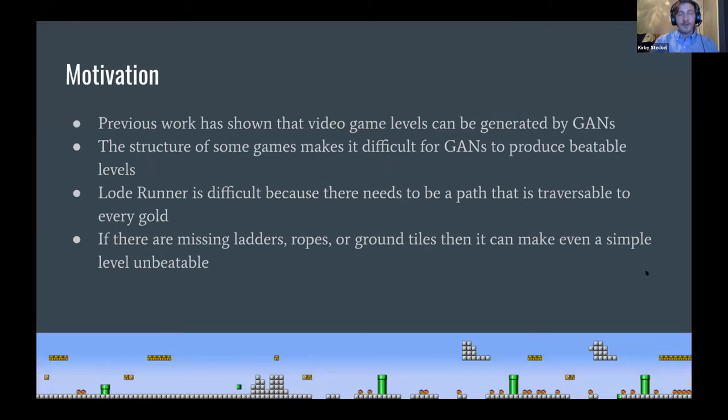The motivation for our work was previous work that had shown that video game levels can be generated by generative adversarial networks. One of the struggles is that sometimes the structure of the levels within the games are difficult because they need a traversable path. Or in the case of Lode Runner, it needs a traversable path to every gold because the goal of the game is to collect all the gold to win. And if there are missing ladders, ropes or ground tiles, then it can make even a simple level unbeatable.